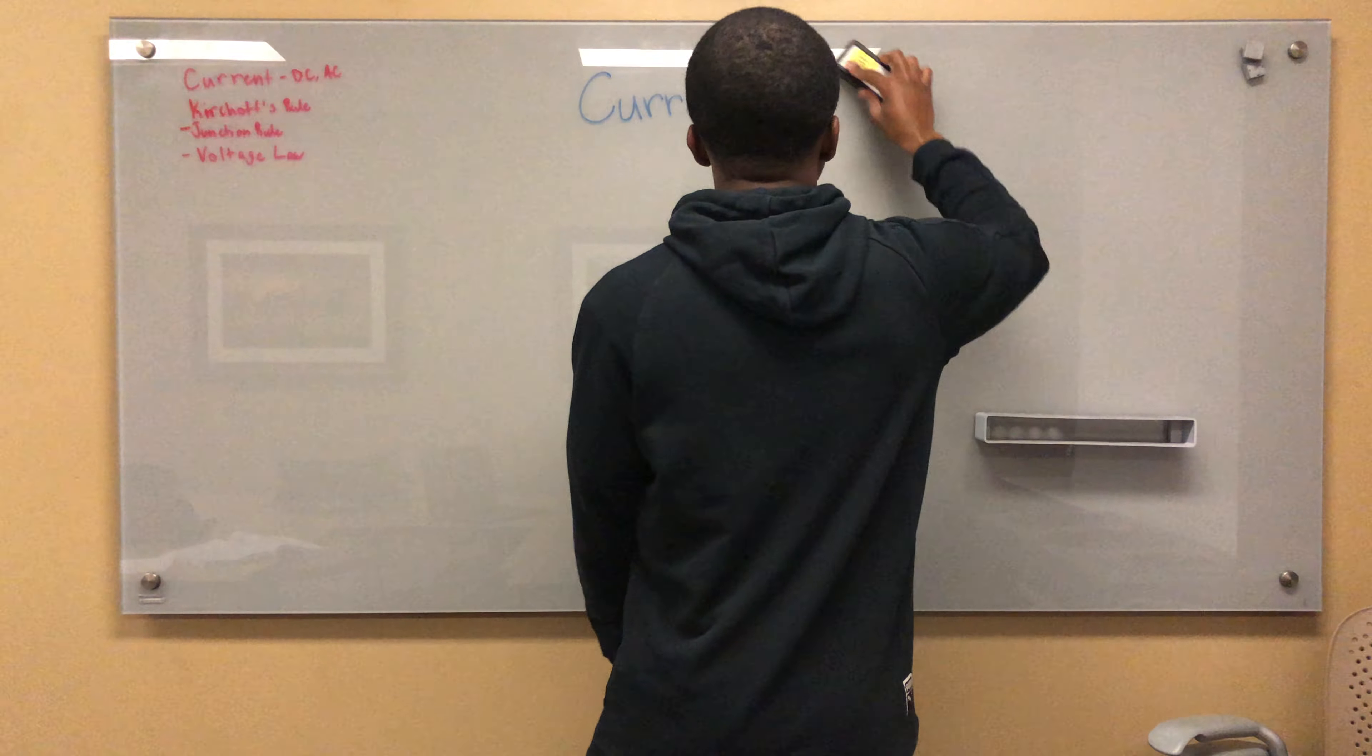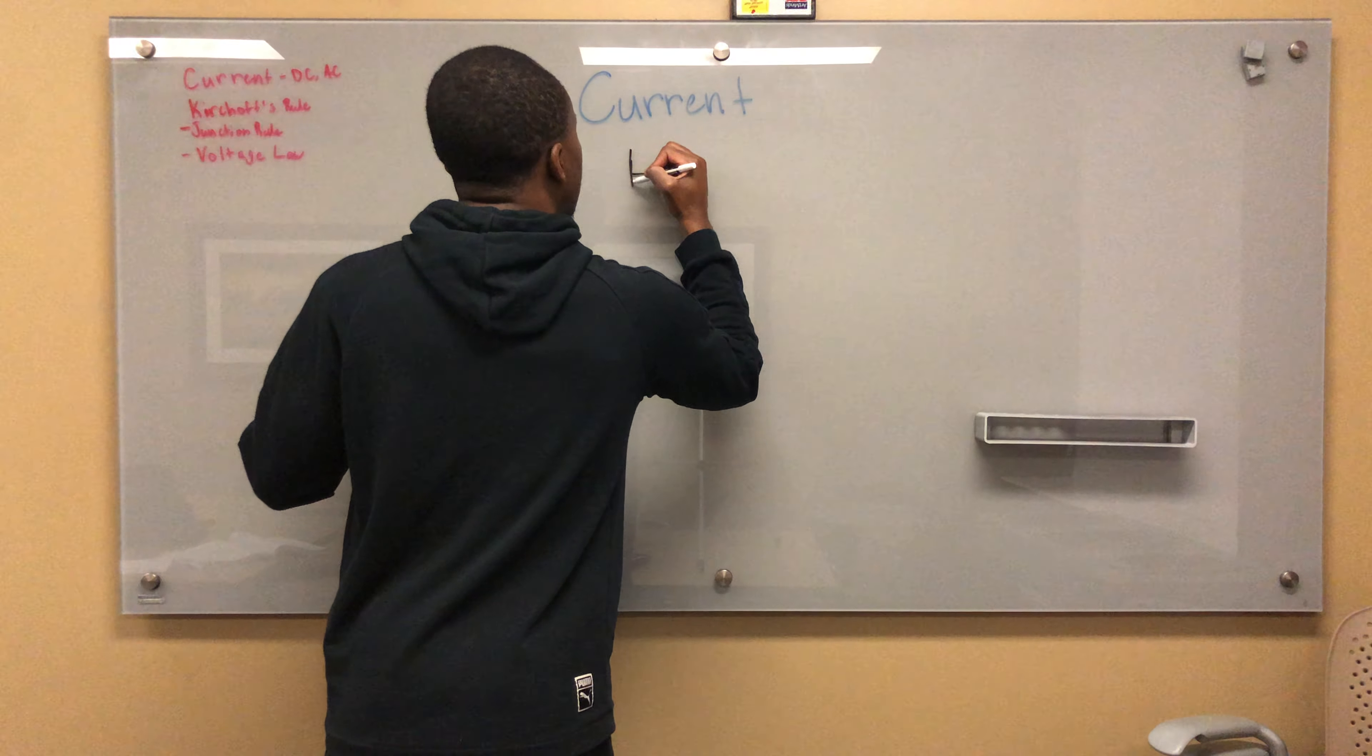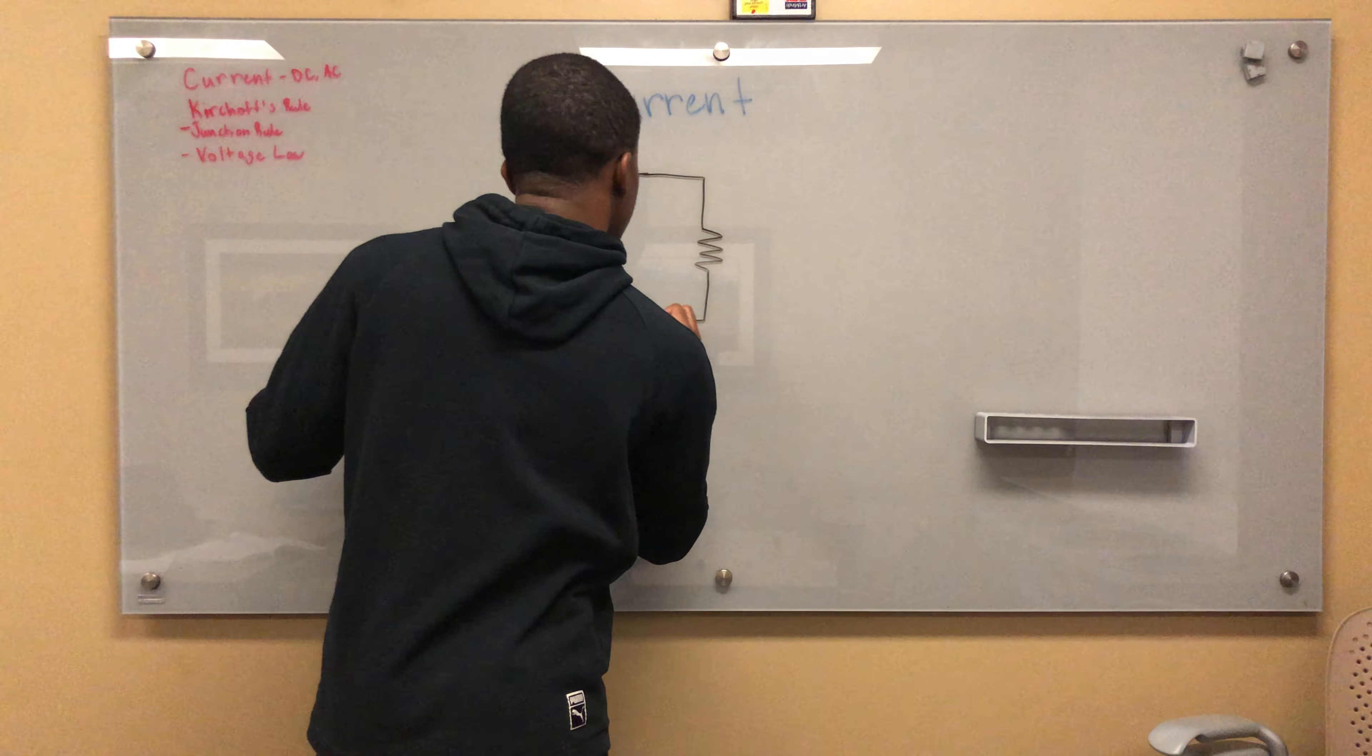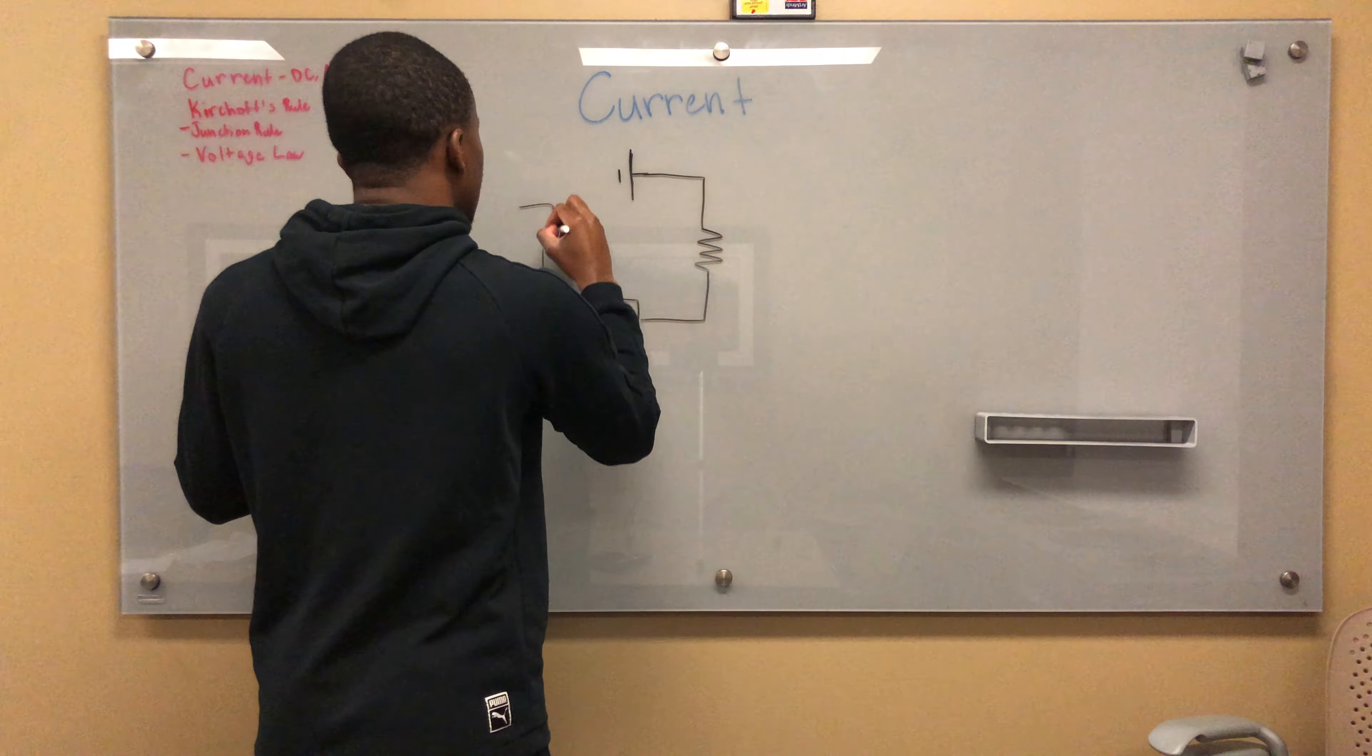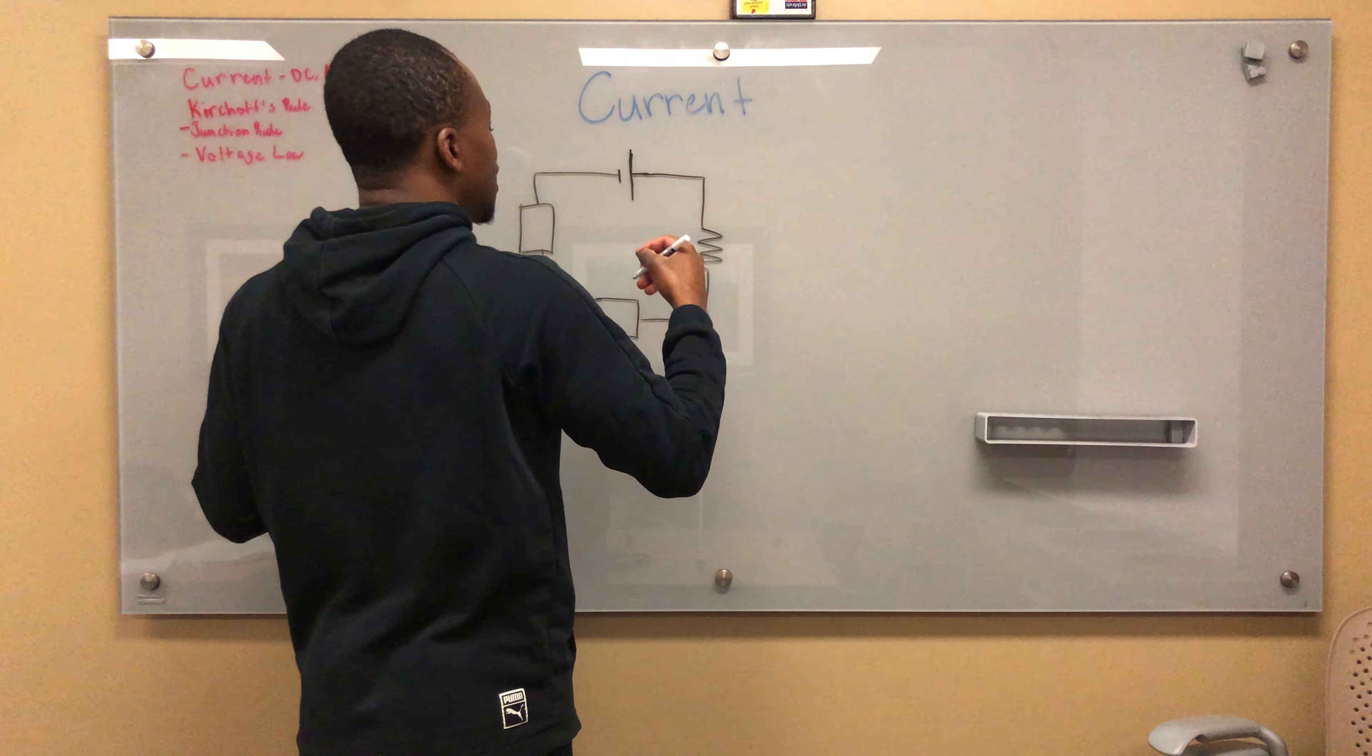Now I want us to talk about Kirchhoff's voltage law or loop rule. So let's say I have another circuit. Let's say I have something here, like a random component here, and another one here. This is a resistor, by the way. Let's say my voltage here is 25 volts.